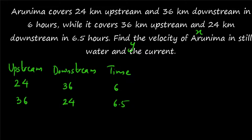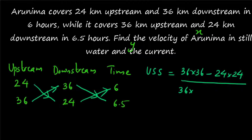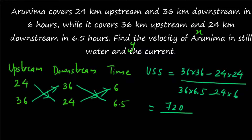Using the shortcut formula, upstream speed = (cross product of upstream and downstream distances, take difference) ÷ (cross product of downstream distance and time, take difference). Numerator: 36 × 36 − 24 × 24 = 36² − 24² = (36 + 24)(36 − 24) = 60 × 12 = 720. Denominator: 36 × 6.5 − 24 × 6 = 234 − 144 = 90... which gives 9. So upstream speed = 720 ÷ 90 = 8 km/h.